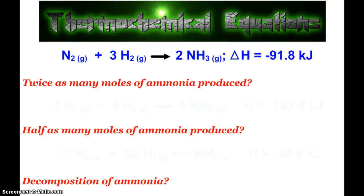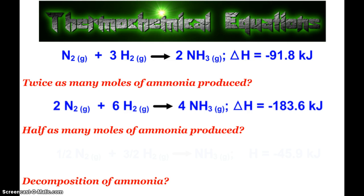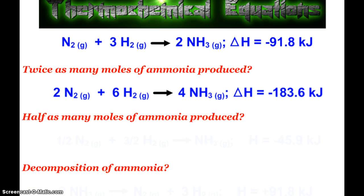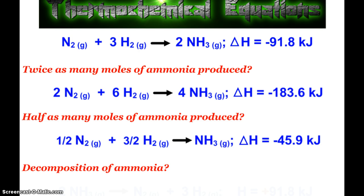So here we see the world famous formation of ammonia equation. Nitrogen gas and three moles of hydrogen gas make two moles of ammonia gas, and we see the delta H is negative 91.8 kilojoules. So what would be the enthalpy change if we produced twice as many moles of ammonia? Well, that would be like doubling this equation, and so the delta H would also be doubled. Half as many, that would be like cutting the recipe in half. If I cut this ammonia recipe in half, half as much heat is being released.